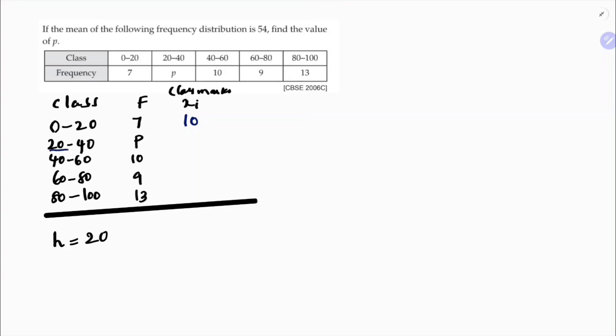20 plus 40, 60, 60 by 2 is 30. So instead of calculating for all, you can just add this h value. h is 20, 30 plus 20, 50, 50 plus 20 is 70, 70 plus 20 is 90.